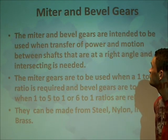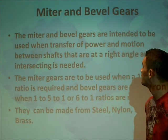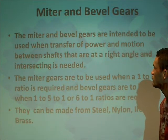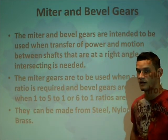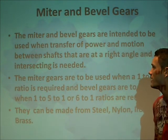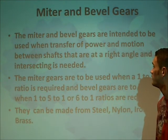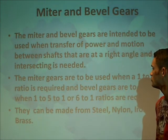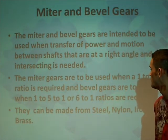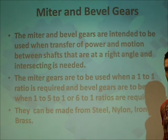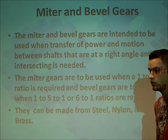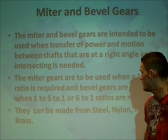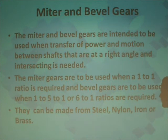Now a brief description of miter and bevel gears. Miter and bevel gears are intended for use when transferring power and motion between shafts that are at a right angle and intersecting each other. Miter gears are used only when there is a 1-to-1 ratio, and bevel gears can be used for ratios from 1-to-1 up to 5-to-1 or 6-to-1. They can be made from steel, nylon, iron, or brass.